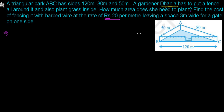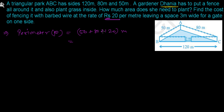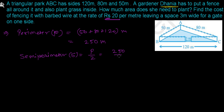To find the area of the triangle, let's first find the perimeter of the triangular park. The perimeter P is the sum of all sides: 50 + 80 + 120 = 250 meters. To apply Heron's Formula we need the semi-perimeter, since we don't have the height to use the formula ½ × base × height. The semi-perimeter s = P/2 = 250/2 = 125 meters.